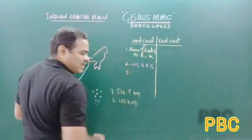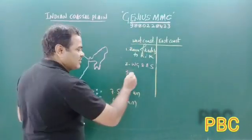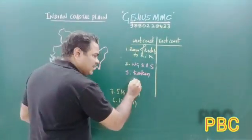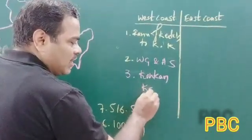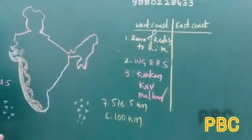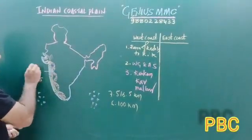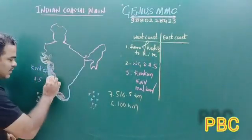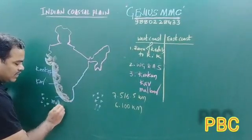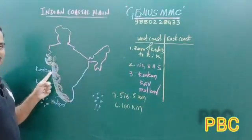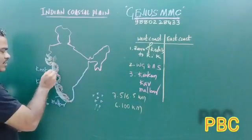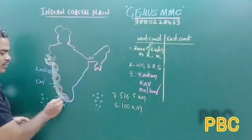The West coastal plain is called by different names in different states. From Gujarat to Goa, it is called the Konkan coast. From Goa to Mangalore, it is called the Karnataka coast. From Mangalore to Kanyakumari, it is called the Malabar coast. Kerala coast is called Malabar coast and Maharashtra coast is called Konkan coast, which has many ports — Bombay port, Goa port, Mangalore port, and Kochi port.